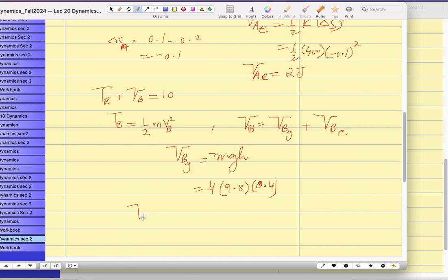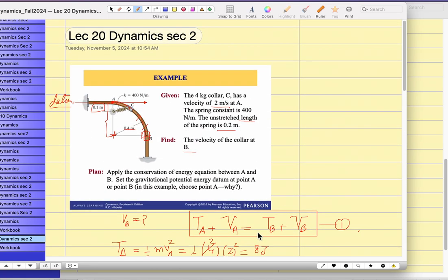How about the V sub B sub E? Half K delta S squared. So I'm going to mark here. Half K is 400. And what is the deflection at position B? You will tell me. Look. When the spring is stretched over here, what is the length? You have to take it as a right angle triangle. This length is 0.4. This length is, now you will tell me. What is this length? 0.3. Good. It is 0.3.